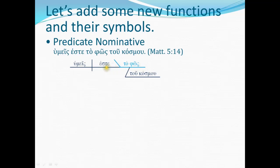It's not a direct object because este is not a transitive verb that has the kind of action that can transfer on to objects. Phos should be parsed in the nominative case in this context, and it's diagrammed as a predicate nominative. Notice how this line, instead of standing vertically, slants upward to the left — the idea is that it points this word back to the subject. The predicate nominative points back to the subject and renames or describes the subject.